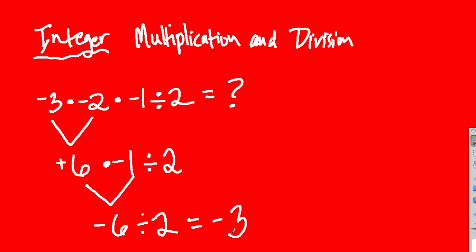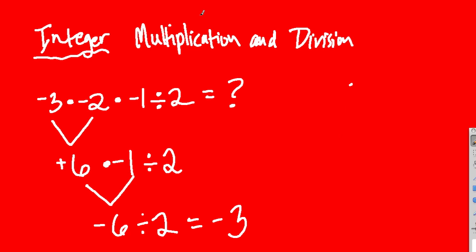Now let's go over what I just did and how I kept track of it. One interesting way to think about all the rules of multiplication and division is to draw a little square — like a window pane with four little squares inside. One of my students came up with this idea, and it helps you really keep track of what you're working on. This square is for multiplication and division.